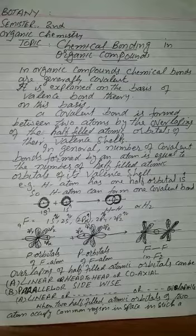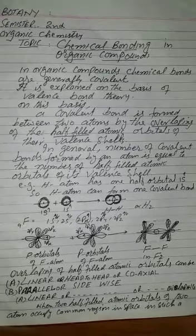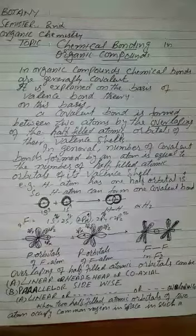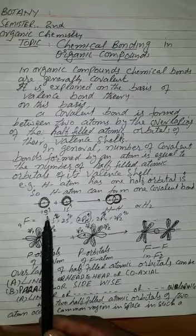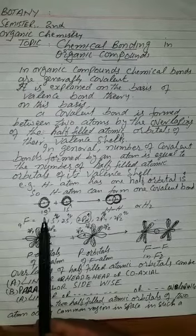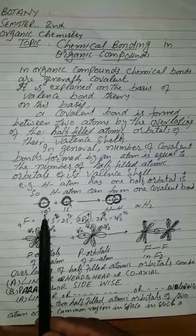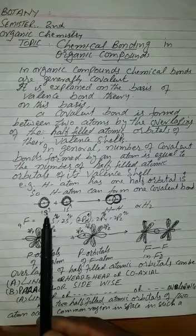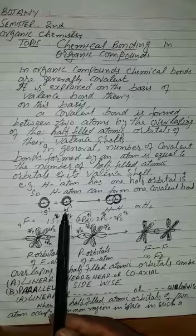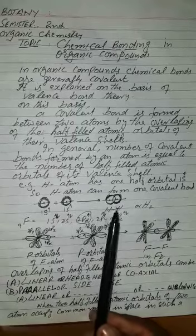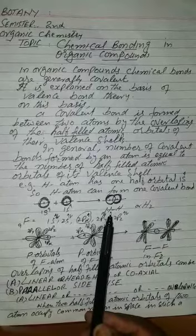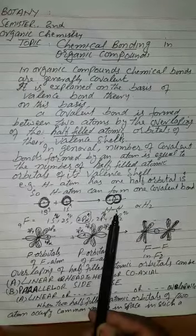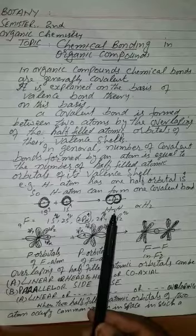For example, hydrogen atom has one half-filled atomic orbital, 1s1. So this hydrogen atom overlaps with one 1s1 half-filled atomic orbital with the half-filled atomic orbital of other hydrogen to form H-H bond. This H-H bond is a covalent bond and it is called sigma bond.